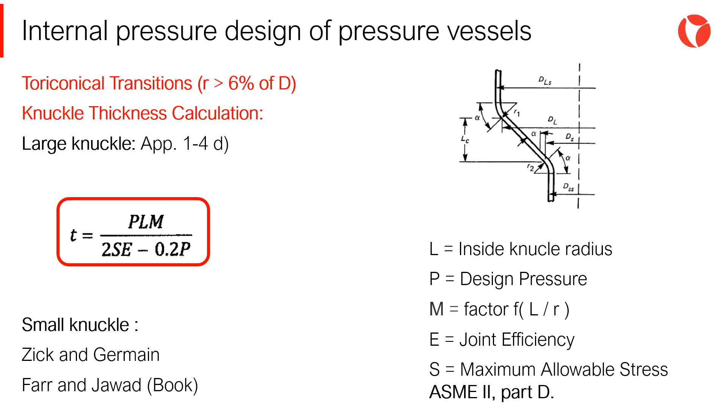The knuckle at the large end is also known as flange, whereas the knuckle at the small end is known as flare. The required thickness for the large end knuckle, or flange, is obtained according to paragraph 14D, included in appendix 1.